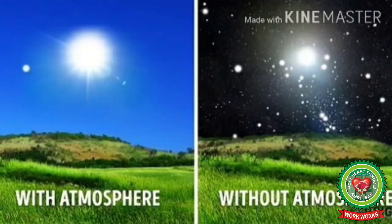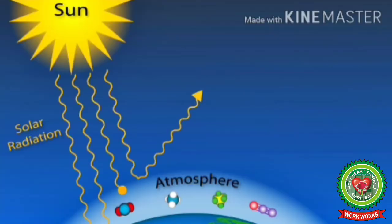There is no definite boundary between the atmosphere and outer space — it slowly becomes thinner and fades into space. The atmosphere is one of the most important components of the environment on the earth. In the absence of atmosphere, life would not have been possible on the earth. The atmosphere is not only the largest source of oxygen, it also protects the earth from harmful ultraviolet radiation from the Sun.